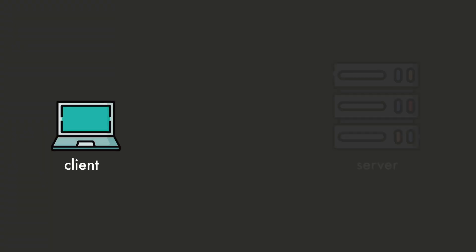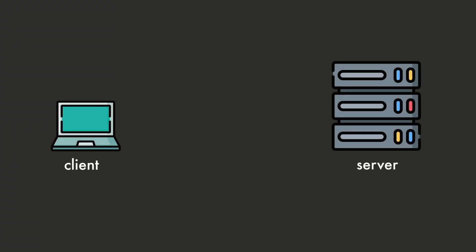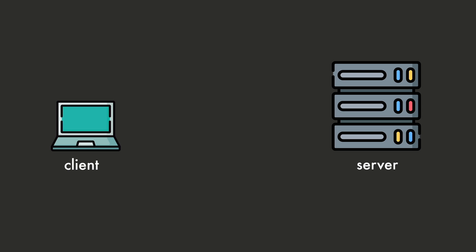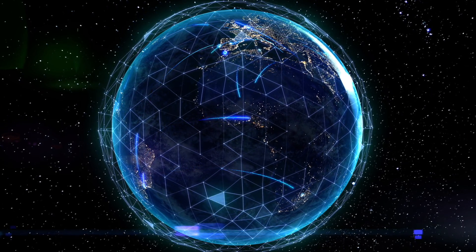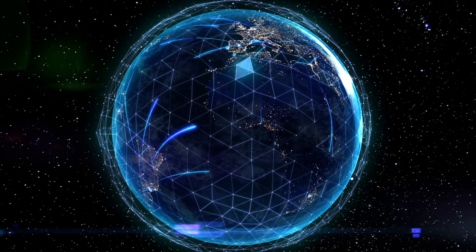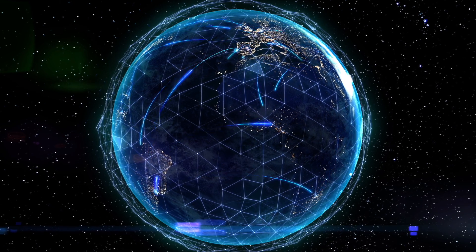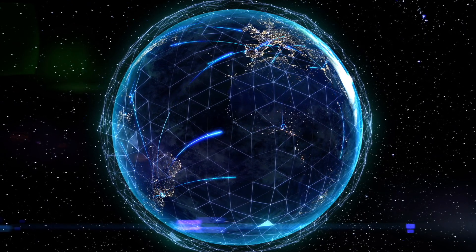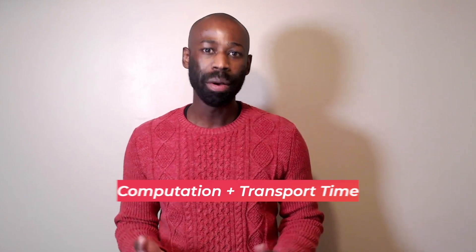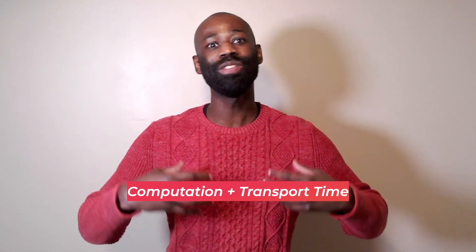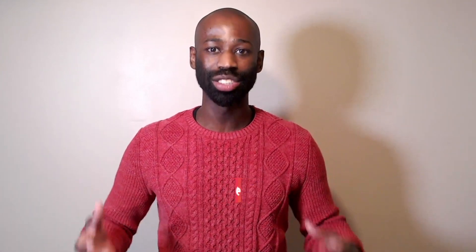When a client interacts with a server, we want the interaction to be as fast as possible. But unfortunately, transporting the data can be slow. Even at the speed of light, if the distance is long enough, it can take 100 milliseconds for the data to travel from the client to the server and back. The server processing the request and generating the response can also affect the response time. So computation time plus transport time adds up and can make an interaction slow.